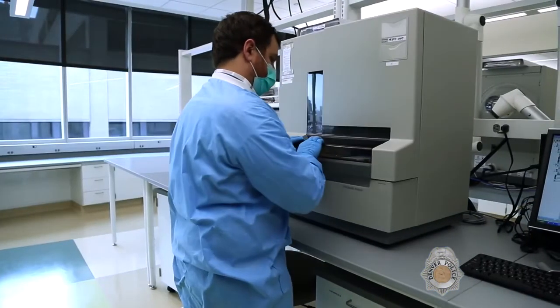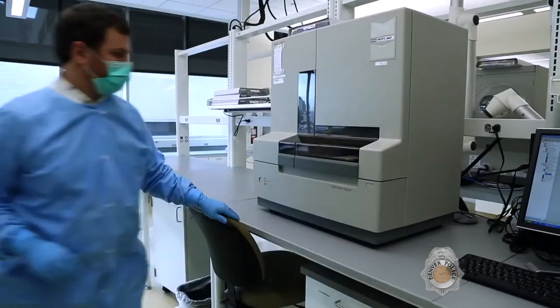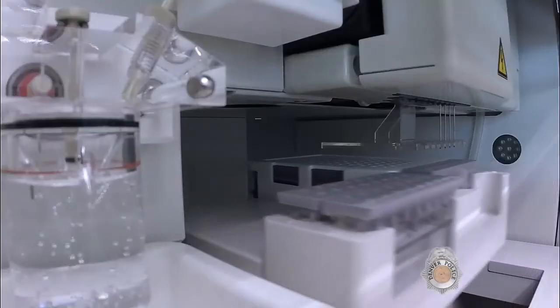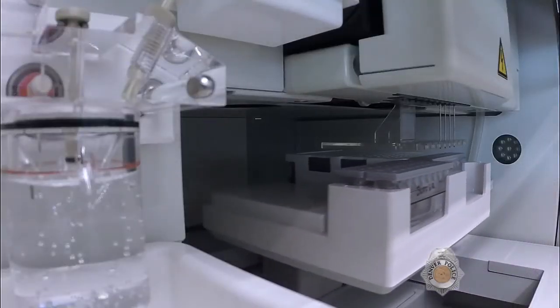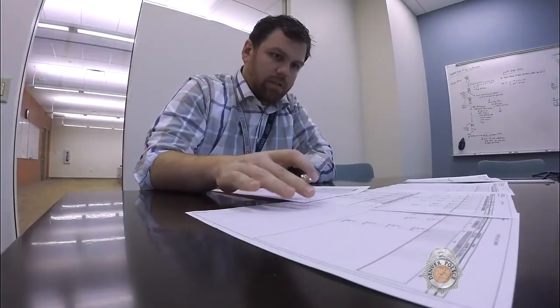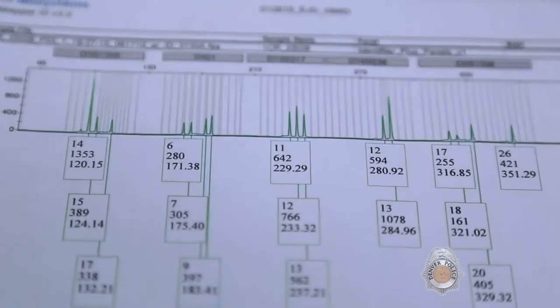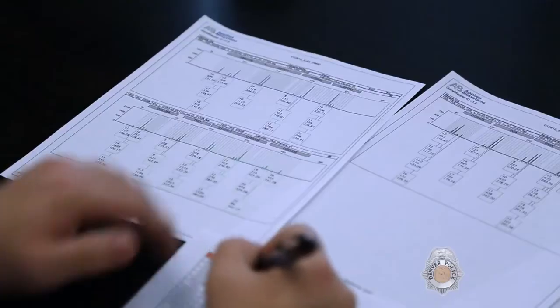Finally, the DNA is detected on an instrument called a genetic analyzer. This machine assembles the finished DNA profile, which analysts use to determine if biologic evidence from a crime scene matches the known DNA profile of a victim or suspect.